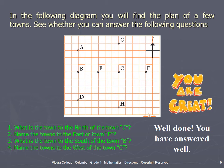In the following diagram, you will find the plan of a few towns. Say whether you can answer the following questions. Question number 1: what is the town to the north of town C? Question number 2: name the towns to the east of town E. Question number 3: what is the town to the south of town B? Question number 4: name the towns to the west of town C.